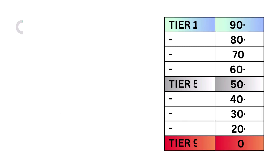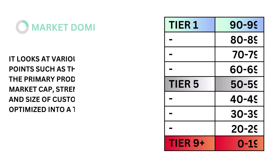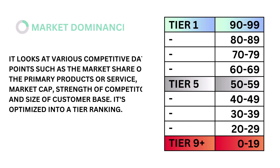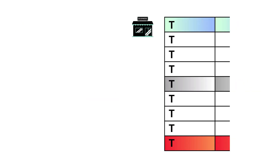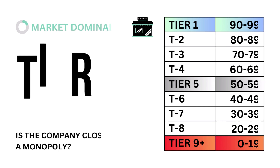Lastly in the business factor is market dominance. Market dominance looks at various competitive data points such as market share of primary products or services, market cap, strength of competitors, and size of customer base. It's optimized into a tier ranking. The models tell us that a market dominance tier 5 is considered average. Here's our market dominance grade.